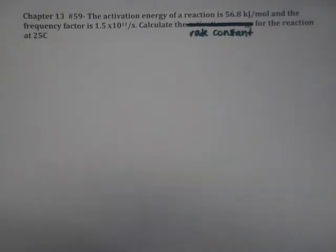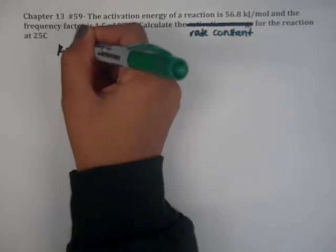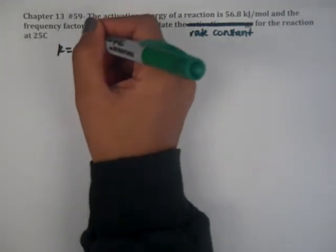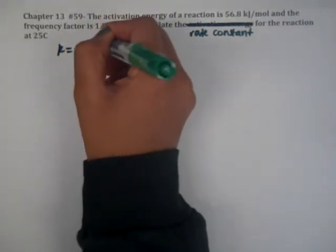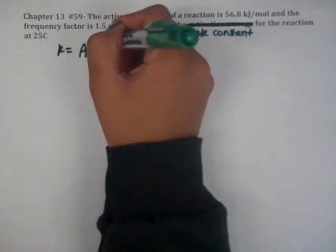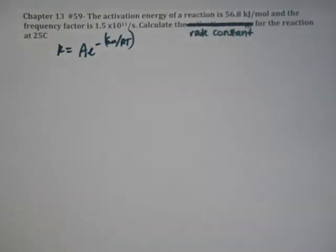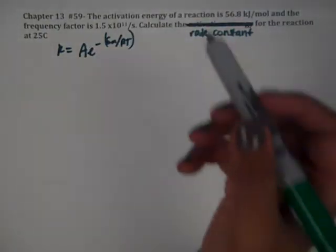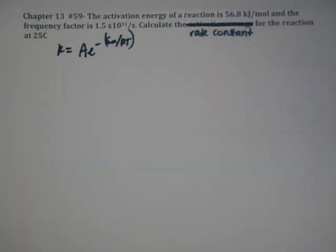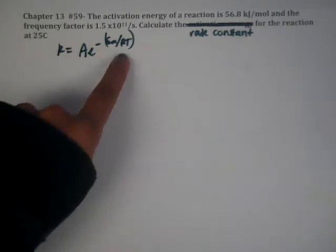Remember, everything is important. Our major formula for this is k equals Ae to the negative Ea over RT. So what are these variables? What is A? That is the frequency factor.